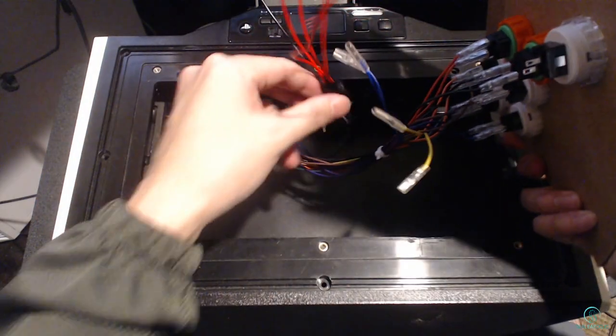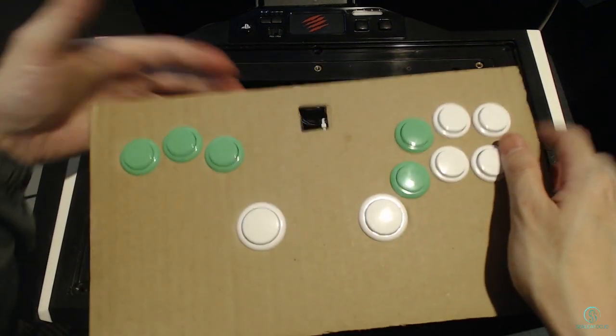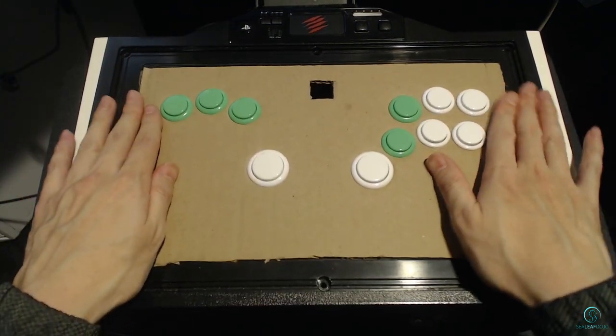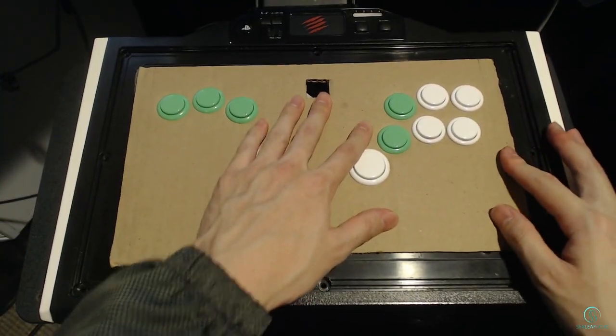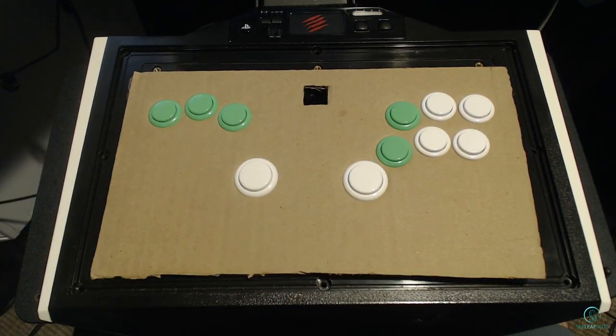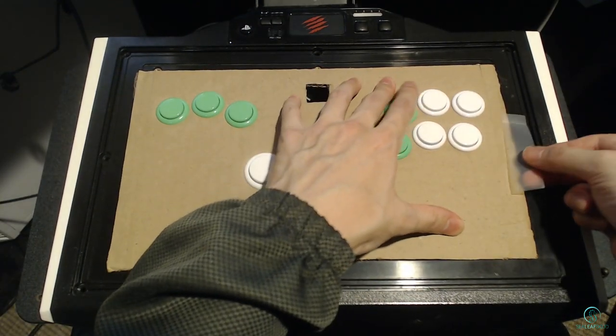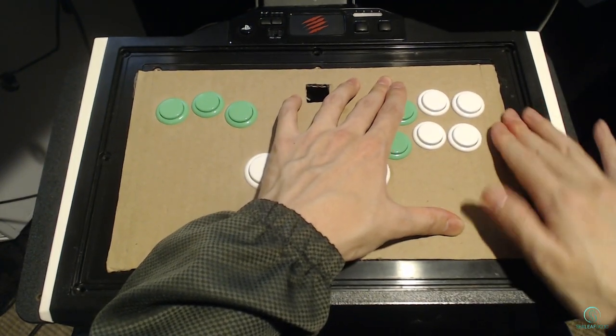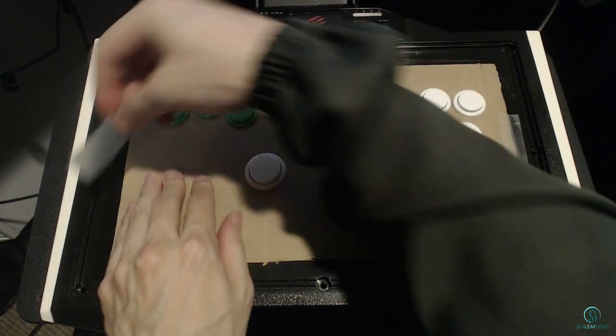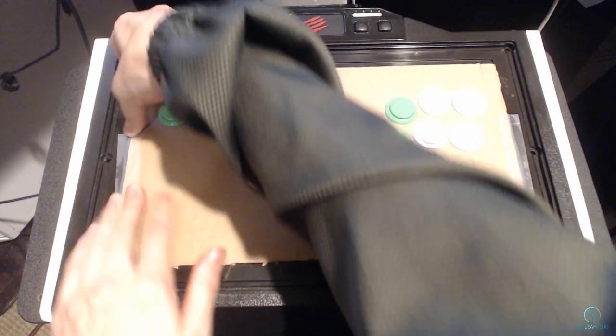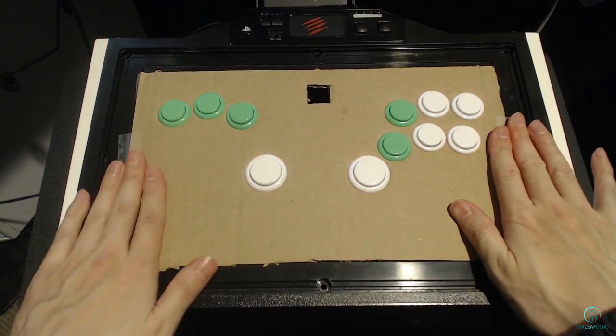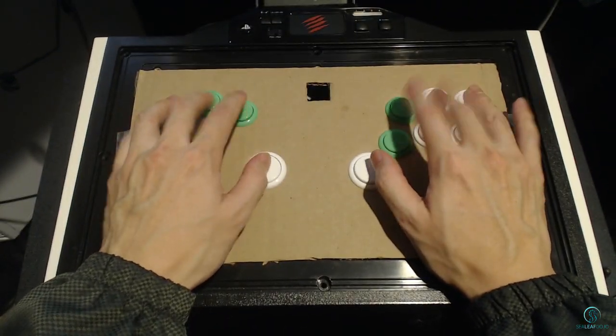After that, place the faceplate on your controller and secure it with tape if necessary. And there you have it, a prototype button controller for testing. Plug it in and see if it works.